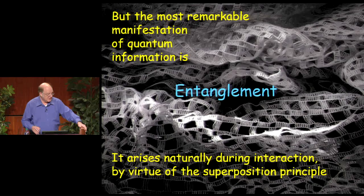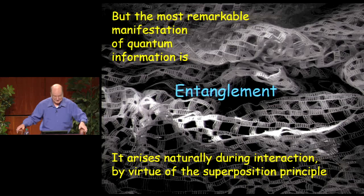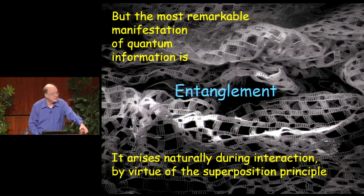The most remarkable manifestation of quantum information is entanglement. I want to talk about where entanglement comes from, how to understand it, and what it can be used for. It arises naturally during interaction between quantum systems because of the superposition principle.